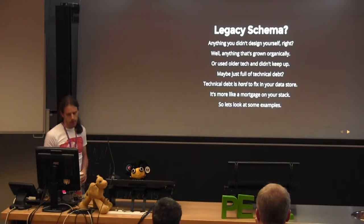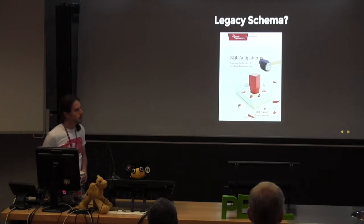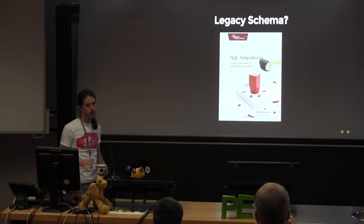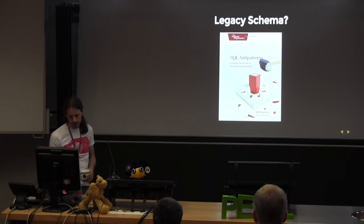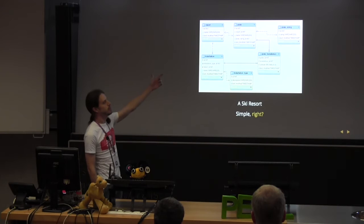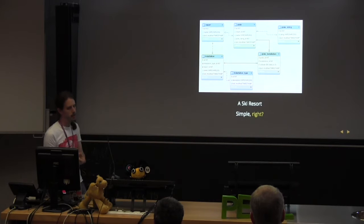What I thought we'd do is look at some examples from our application. Some of these come from this book, which has about 25 or 30 anti-patterns — not all of them are signs of legacy specifically; one or two are quite legitimate for some use cases. I came up with a little ski resort schema to demonstrate this. You have a resort which can have some pistes and some installations like ski lifts, and pistes are linked to installations. It's simple enough to understand but sufficiently complex when you dive into the details.